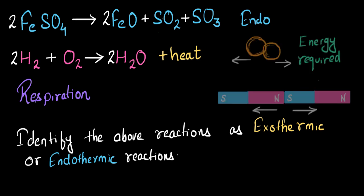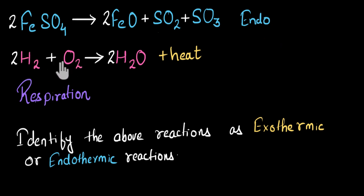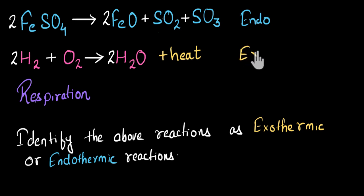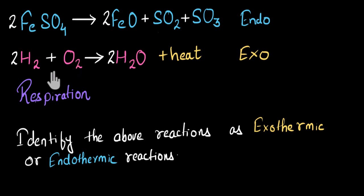Now let's move on to the next one: hydrogen plus oxygen gives water — a combination reaction. It's written with plus heat on the product side, which symbolizes that heat is being released along with the products. Since heat is being released, this is an exothermic reaction. In exothermic reactions, heat is released. Even if plus heat wasn't written, I could have guessed — because in general, combination reactions release heat.